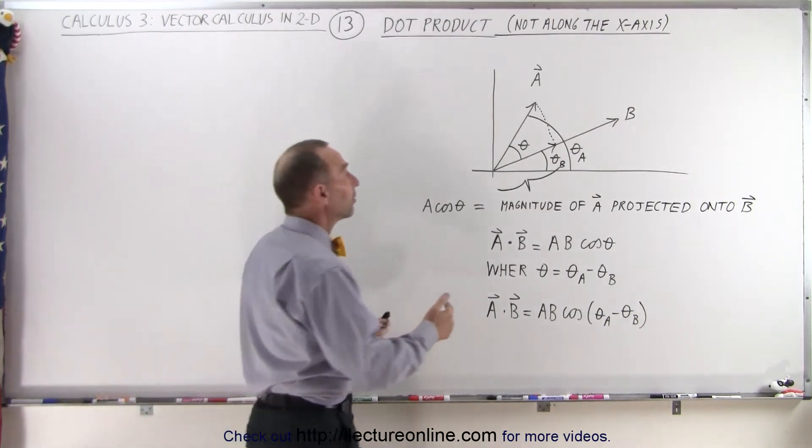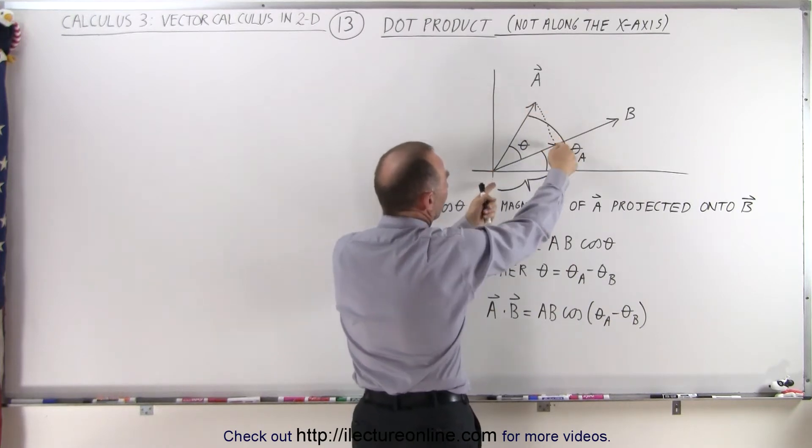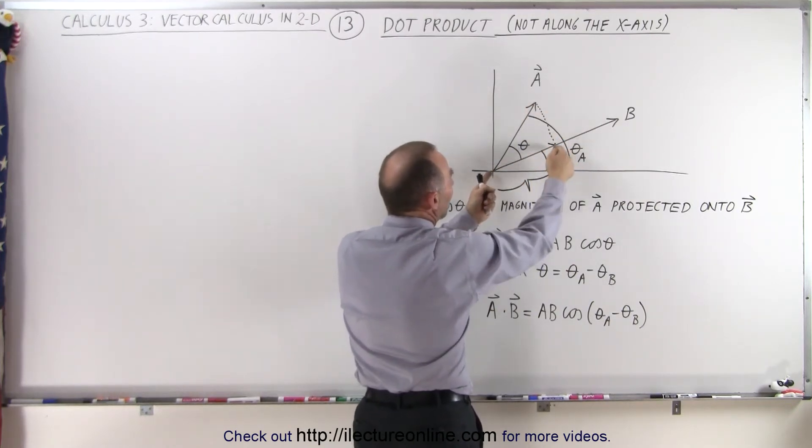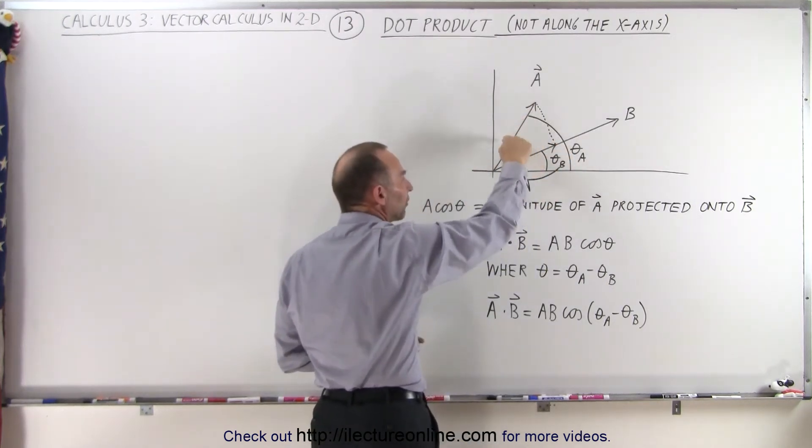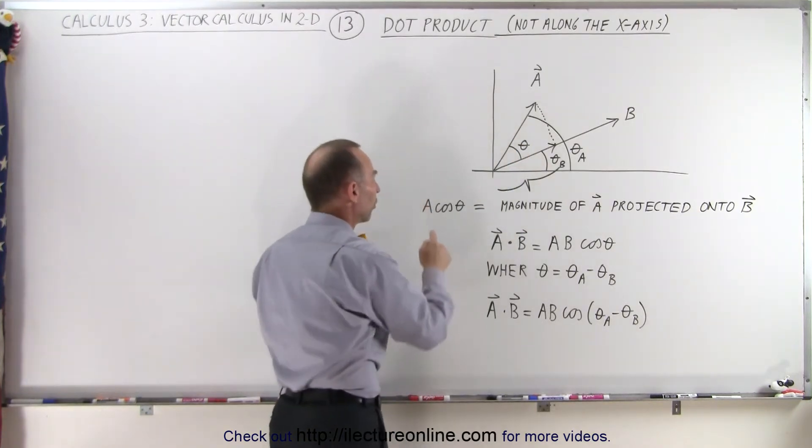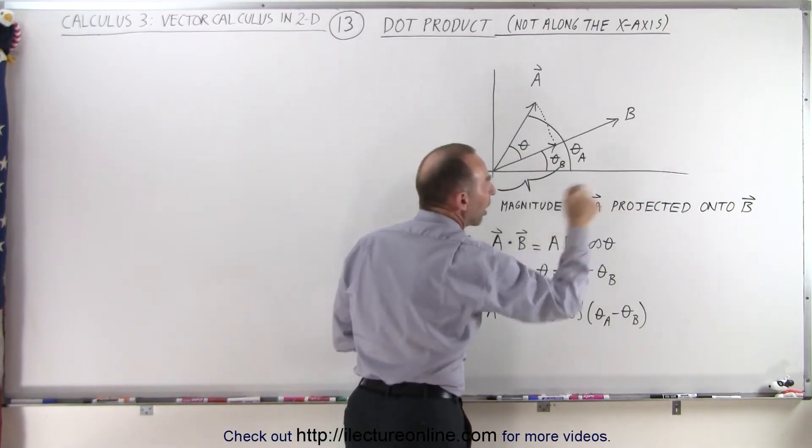All we need to realize here is that when we project one vector, like let's say vector A onto vector B, that the magnitude or length of that projection is simply equal to the magnitude of A times the cosine of the angle between the two vectors. So A times the cosine of theta is always going to be the magnitude of A projected onto vector B.